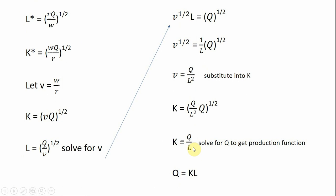The final step is just to solve this equation for Q, and that leads us to the firm's production function: Q equals K times L. So that's how you go from a cost function to a production function with the help of Shephard's Lemma. I hope you found this video helpful.